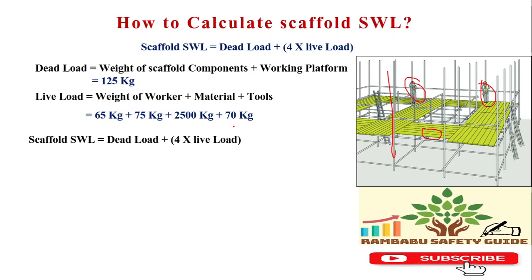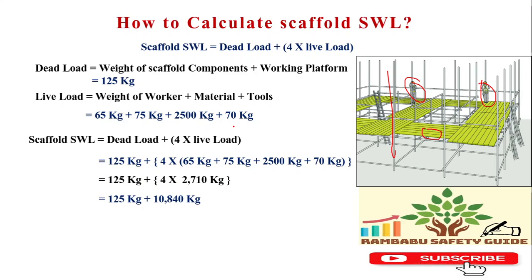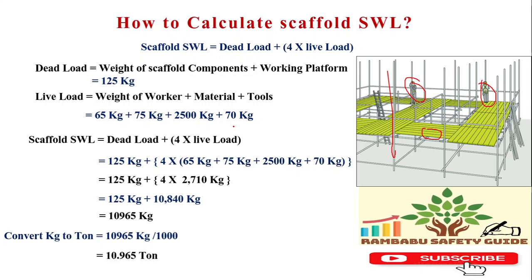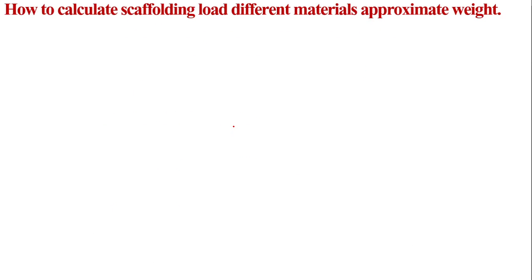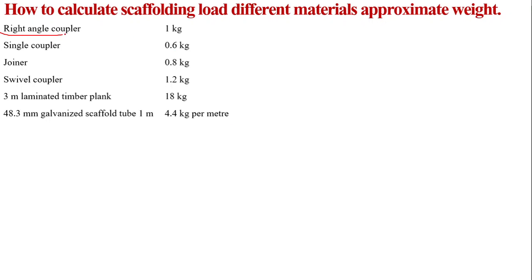We apply the formula: Dead Load plus 4 times Live Load. The dead load is 125 kg and the live load total is approximately 10,965. The material weights shown in the chart are: right-angle coupler is 1 kg, swivel coupler is 0.6 kg, the joiner pin is 0.8 kg, base plate is 1.2 kg, planks are 18 kg for 18.3 mm thickness, and 1 meter of tube pipe weighs 4.4 kg.